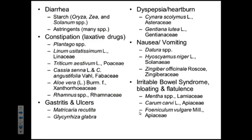Some examples of bulk-forming laxatives include Linum usitatissimum, which is linseed; Triticum aestivum in the grass family — that's wheat. Stimulant laxatives would include Cassia senna and Cassia angustifolia — those are the senna pods I've shared here. We'll pass these around so you can take a better look at them. Other ones include aloe vera — drinking aloe vera juice can act as a stimulant laxative.